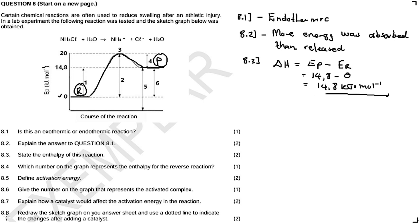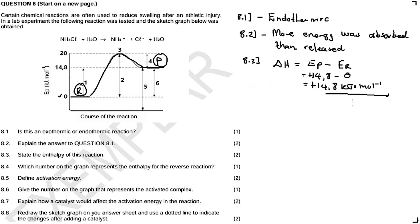You should note something: the enthalpy takes up either a positive or a negative sign. A positive sign means we have an endothermic reaction; a negative sign simply means exothermic. So the sign of delta H is important — put the sign as well. So 8.4: which number on the graph represents the enthalpy for the reverse reaction?